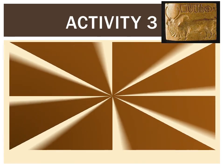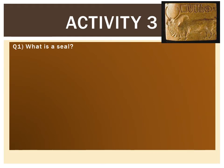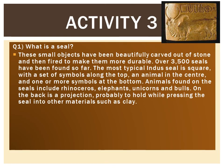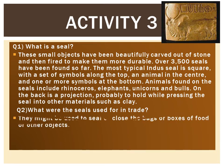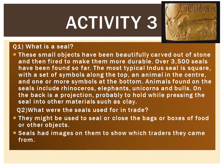Activity 3 asks: what is a seal? Seals are small, beautifully carved objects — you can see a carving of a bull here, and they depict different animals. When you search the internet you will find many examples. These seals were used to close bags or boxes of food or other objects. The seal's image helped people identify which trader the goods came from.